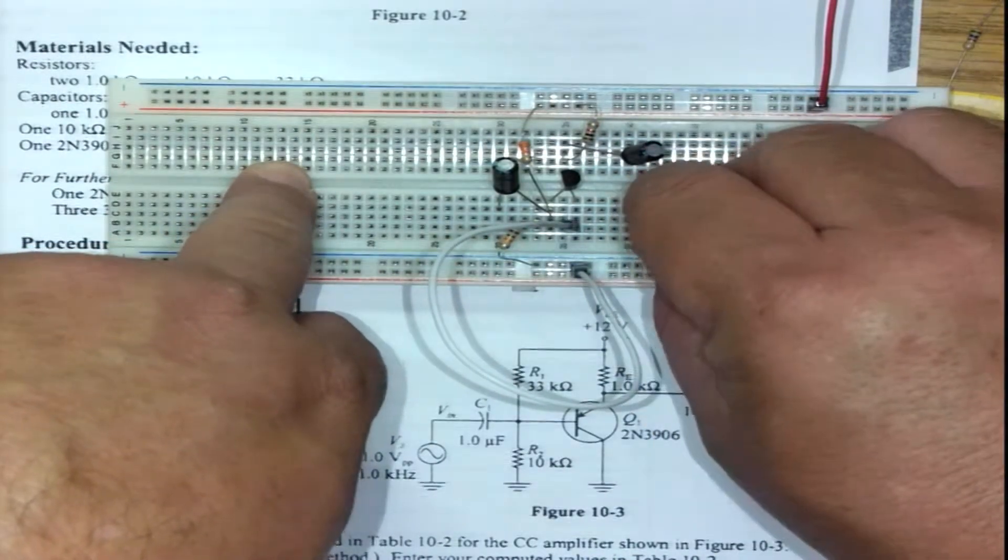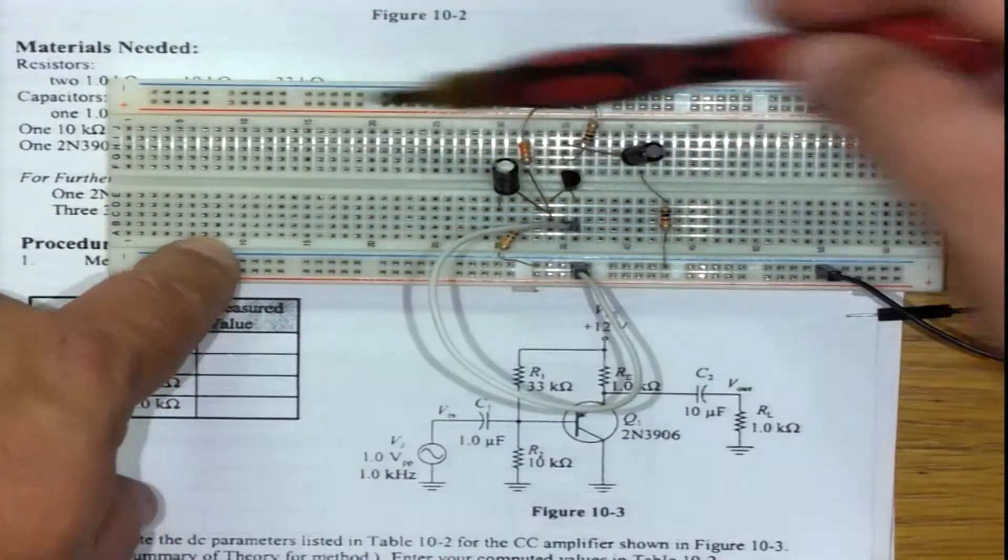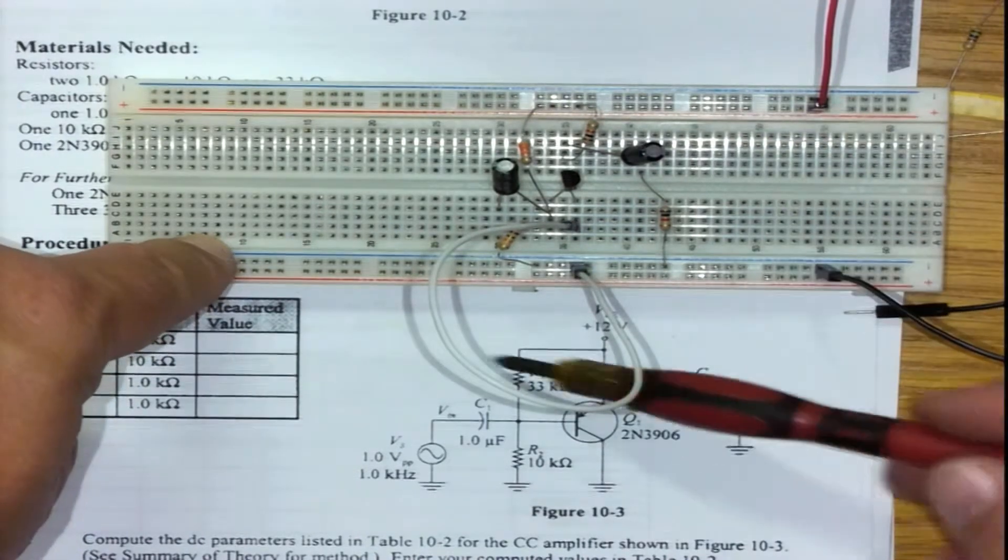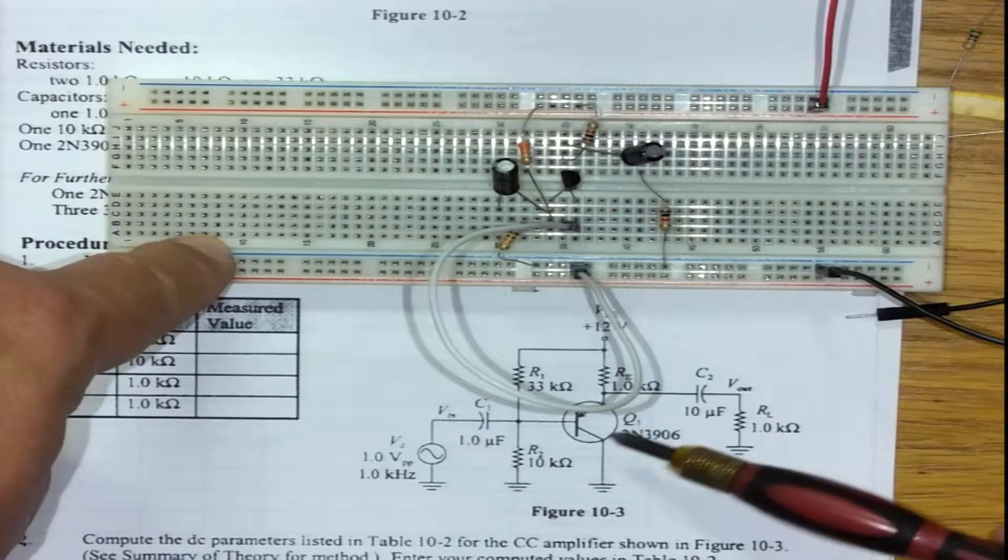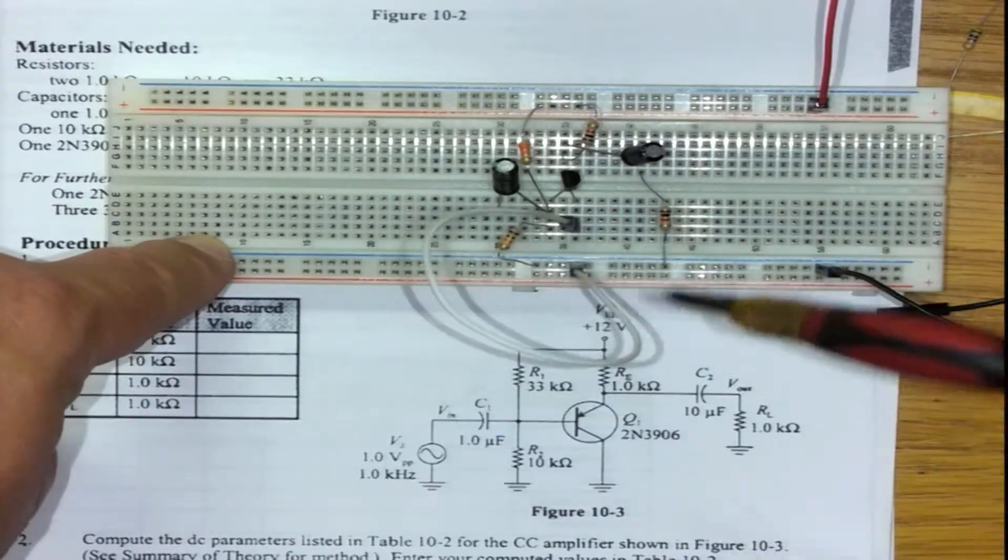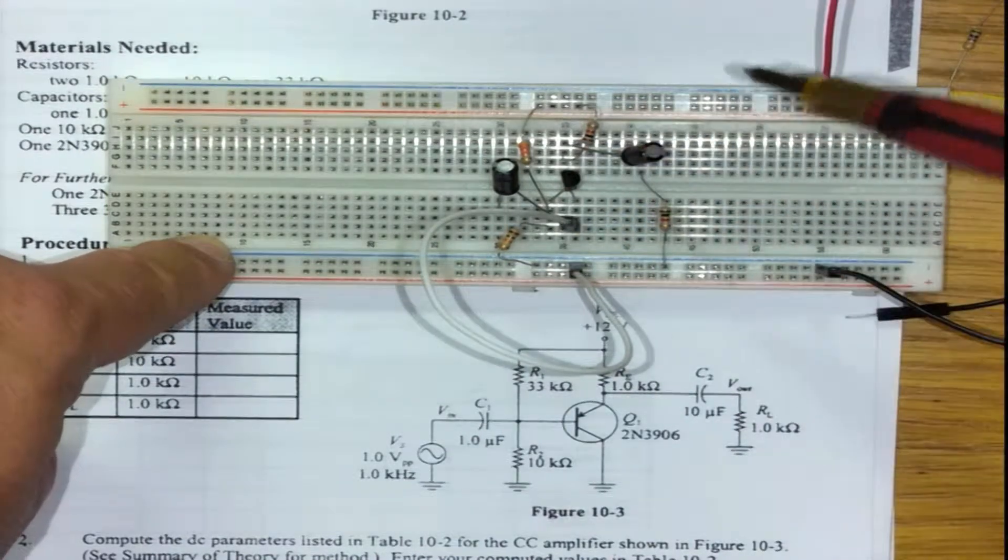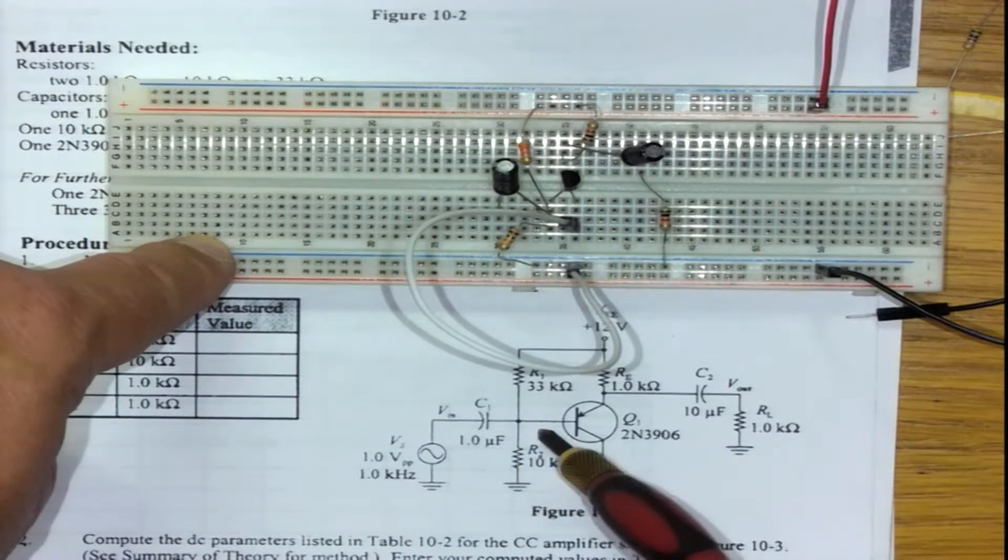Then we use a one kilohm brown black red—that is my load—and that comes to ground. To recap: orientate your breadboard so that the positive is on top, negative at the bottom. It aligns with the way the circuit looks like.